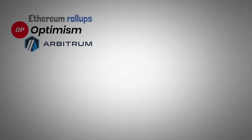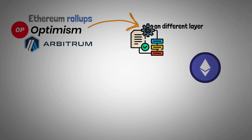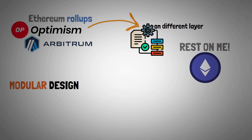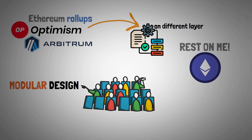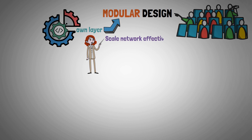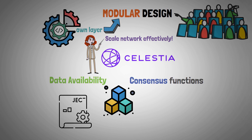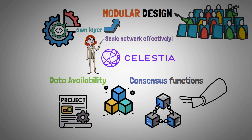With Ethereum's roll-ups like Optimism or Arbitrum, which abstract the execution function to a different layer while Ethereum handles the rest, the modular design has gained a lot of traction. The separation of one or more blockchain functions into their own layer in modular blockchains was proposed as a way to scale networks more effectively. That's where Celestia comes into play, handling data availability and consensus functions of the modular stack, allowing other projects and chains to build upon its technology.